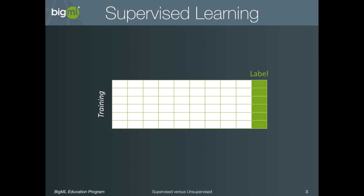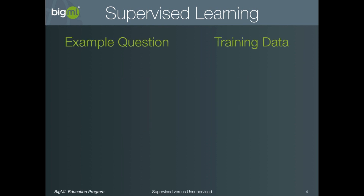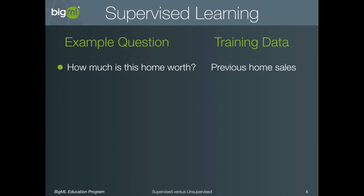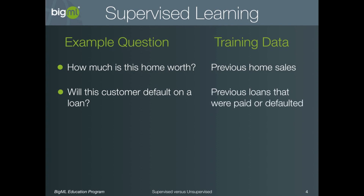Let's take a quick look at the types of questions that can be answered with supervised learning and the type of data you would need to provide. First, as we already saw, you could ask how much is this home worth, where you would train the model using the previous sales of other homes. You could also build a model which tries to predict if a customer will default on a loan. In this case, we would need to train the model with previous loans where we have labeled each one as being eventually paid off or defaulted.